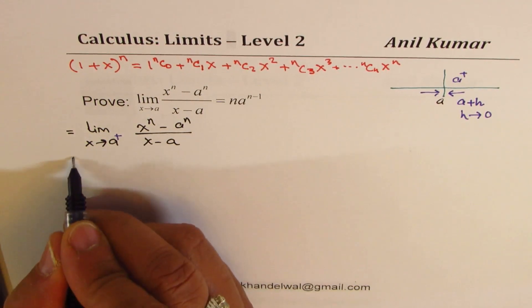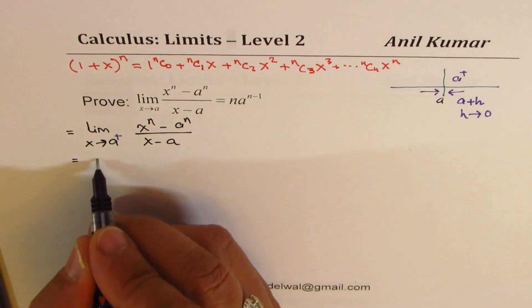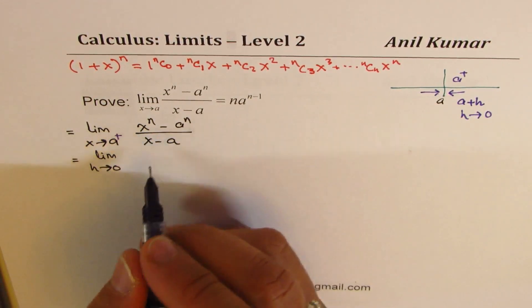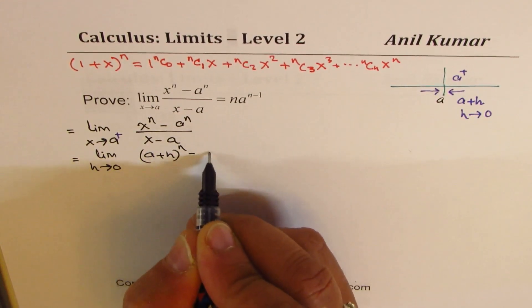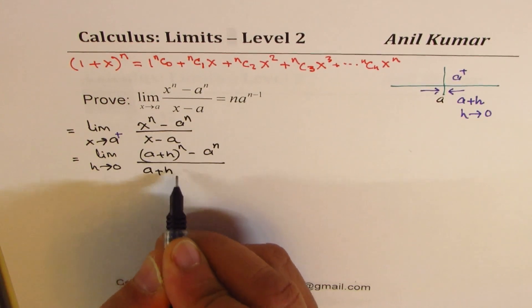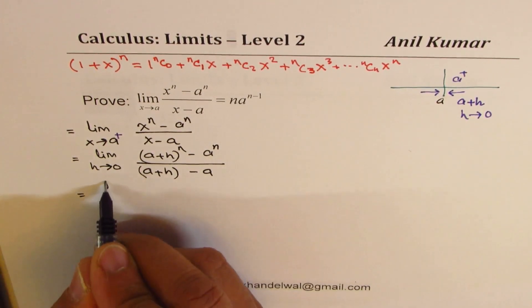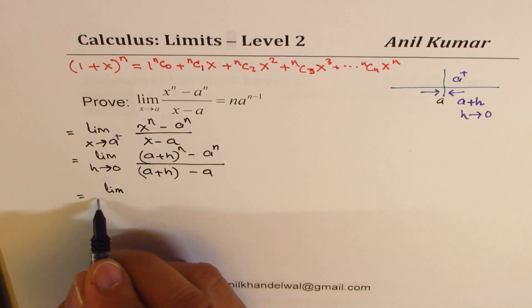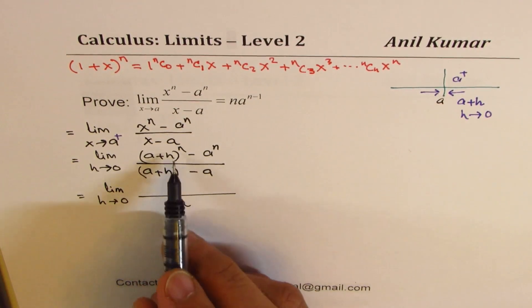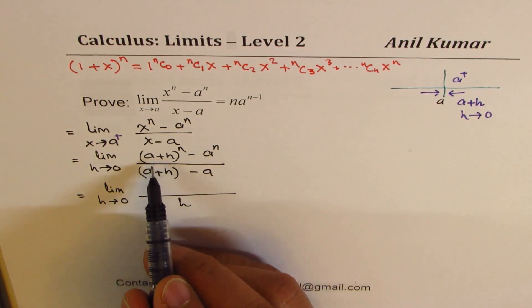Approaching a from the right side means we are at a point which is a plus h. So we write this as limit h approaching zero, changing x to a plus h: we get (a + h) to the power of n minus a to the power of n, over (a + h) minus a. This gives you an idea about the difference quotient method. The denominator is simply h, which reminds you of the difference quotient formula.